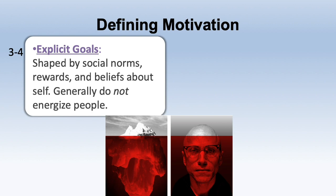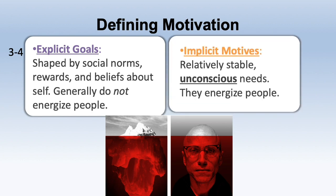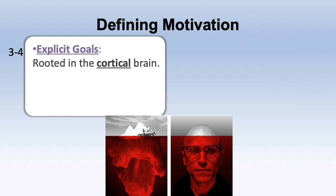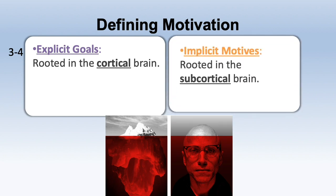We're often more motivated by implicit motives — relatively stable, unconscious needs that really energize people. On a brain level, explicit goals are rooted in the cortical brain, your cognitions, but they're not necessarily what motivates you. Implicit motives are rooted in the subcortical brain at the emotional level. That's why we have to tap into our emotions, and motivation is usually paired with the subject of emotions.